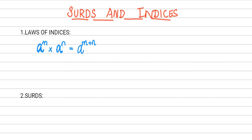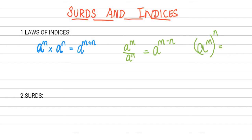Another scenario is when we are dividing the same two numbers: a to the power m divided by a to the power n. In this case, instead of adding the powers, we subtract them, giving a to the power m minus n. We also have a scenario where a single number has two powers: a to the power m to the power n. In this case, we multiply the powers together.